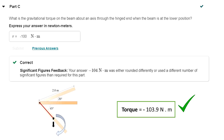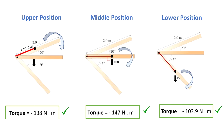The textbook answer was negative 100 Nm due to different significant figures. To summarize: the gravitational torque for the upper position is negative 138 Nm, for the middle position is negative 147 Nm, and for the lower position is negative 103.9 Nm. The highest torque is when the beam is in the middle position, because the angle between the radius and the force of gravity is 90 degrees and sine of 90 equals 1.